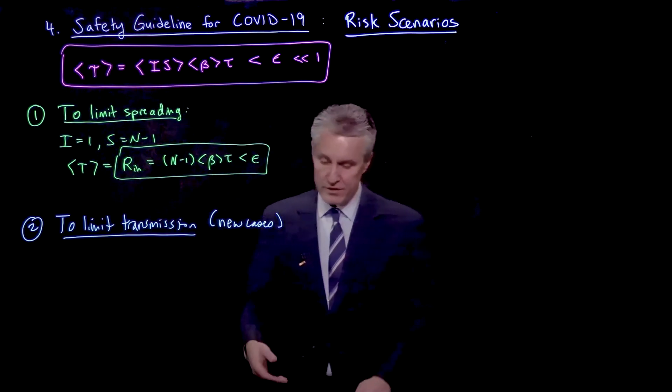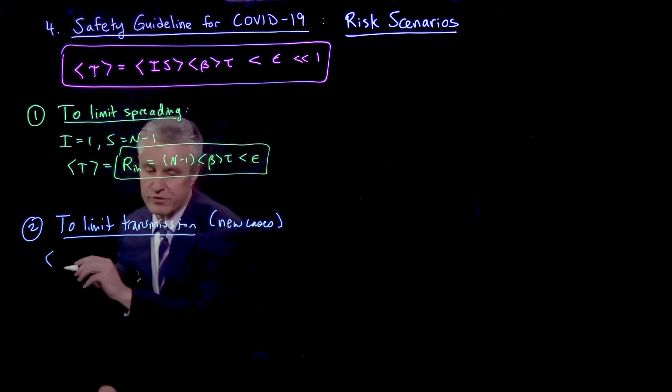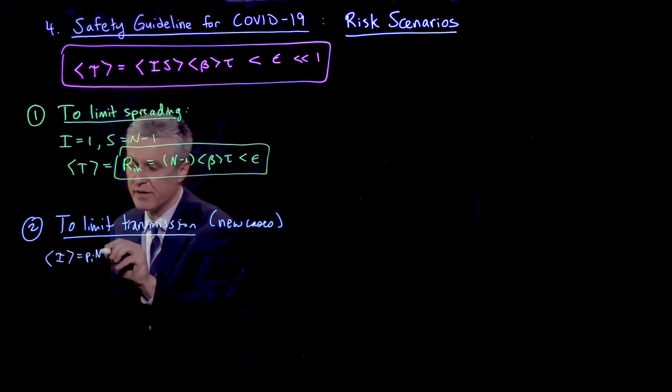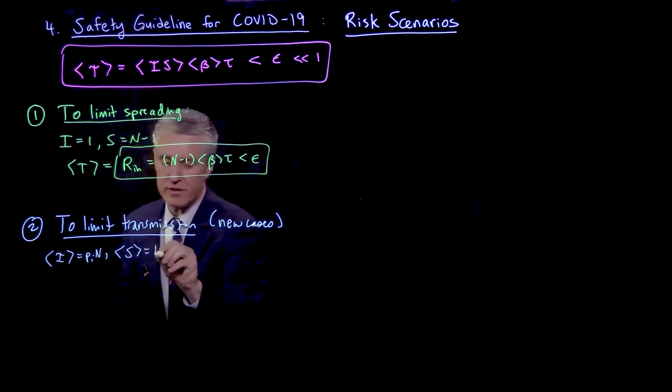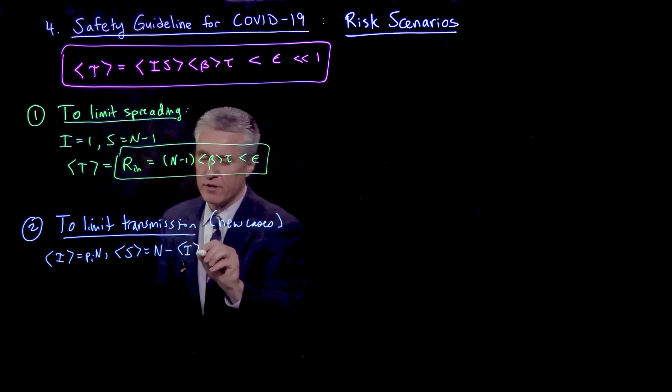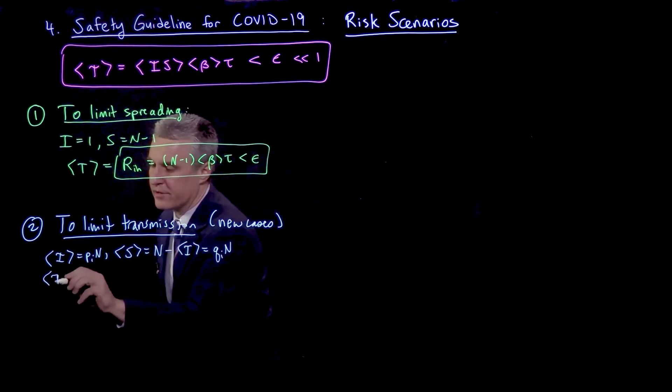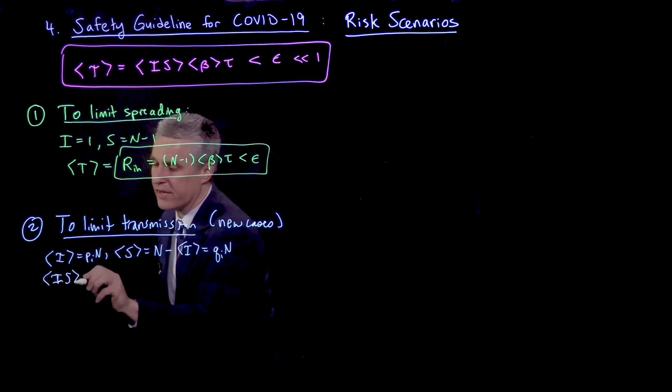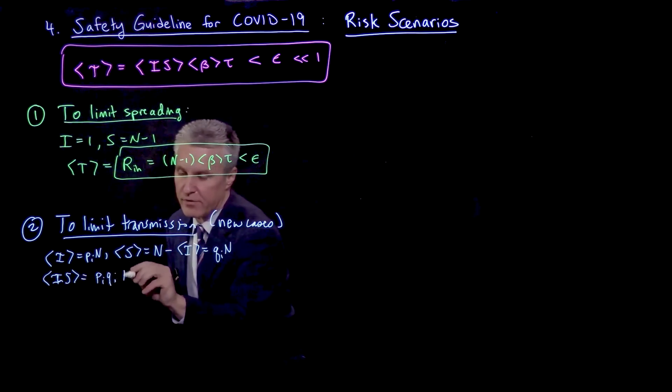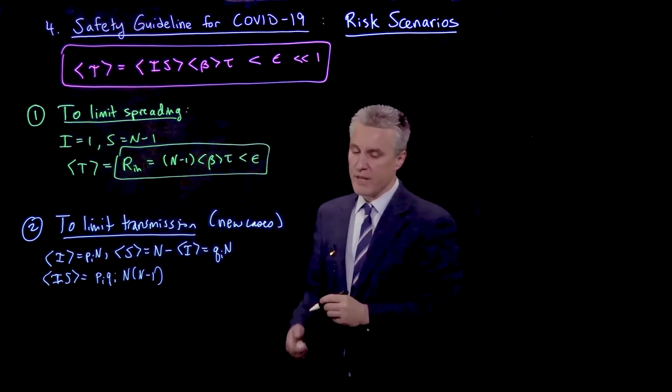So now I'll just remind you of the results from the last board for that situation with all the assumptions of the previous model. The expected number of I is now P_I times N. The expected number of susceptibles is N minus the expected number, which is Q_I times N. And importantly then, the expected value of I times S is P_I Q_I times N times N minus 1.